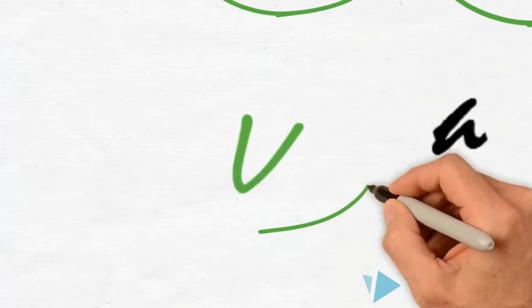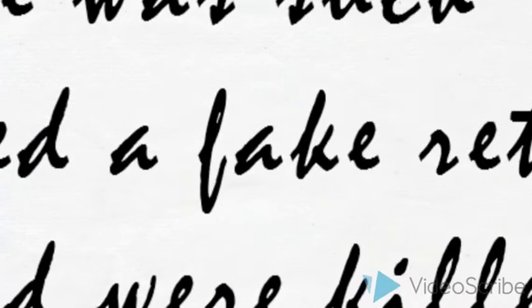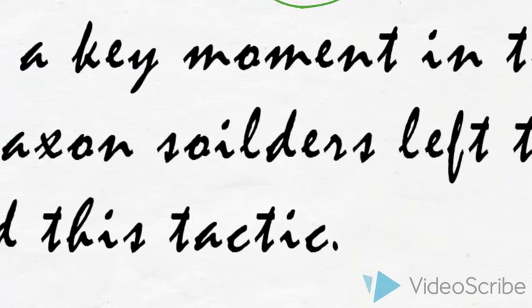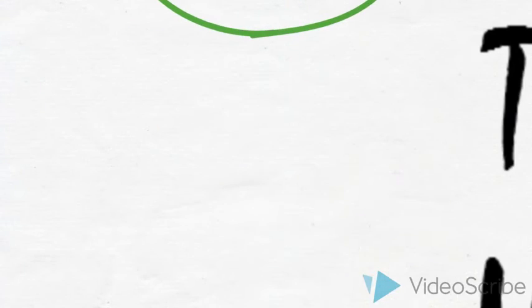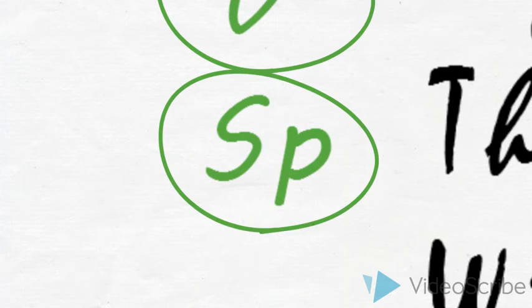V identifies where the pupil could improve their vocabulary. Other literacy codes are C, to identify where a connective is needed, and O, when a more effective opening is needed.